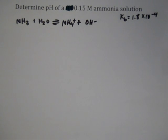Our last type of problem is a weak base problem. We need to determine the pH of a 0.15 M ammonia solution. Remember, ammonia is a weak base because it's not one of the strong bases formed by alkaline or alkaline earth metals.